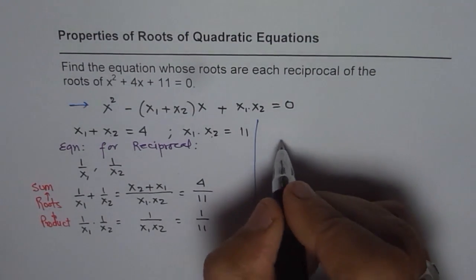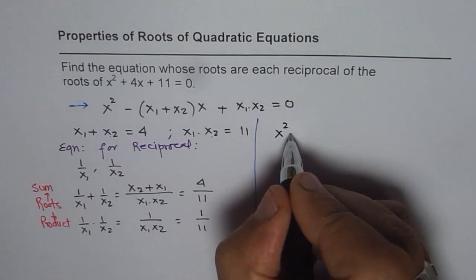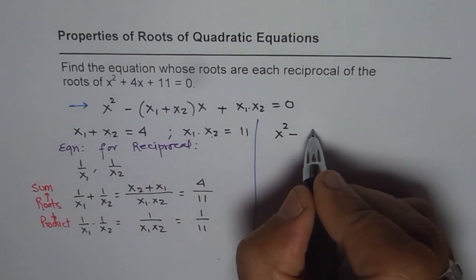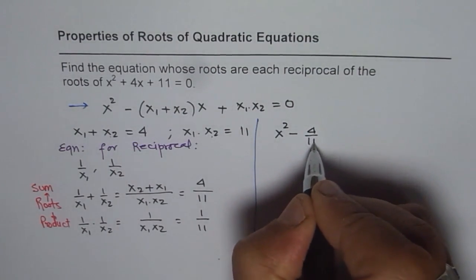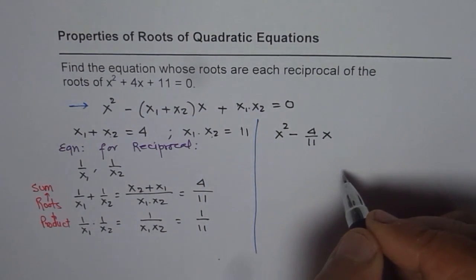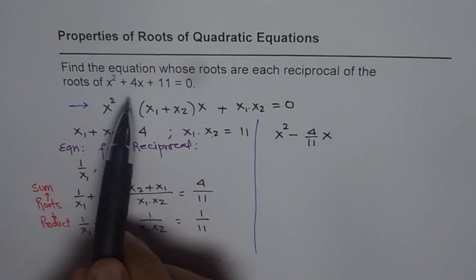So we can write our equation as x² minus, what is the sum? 4/11. So we have (4/11)x and then we did a mistake here.